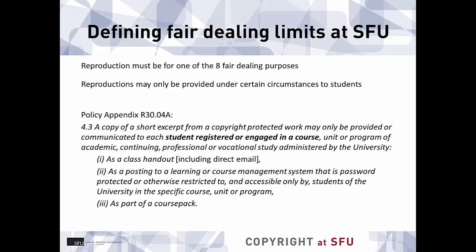SFU, along with many other universities in Canada, has set out parameters and safe harbour limits for faculty and staff to make it easier to know what you can and can't do. The SFU Fair Dealing Policy R30.04a, called Application of Fair Dealing under Policy R30.04, sets out limits that apply to copying works for use in your courses under the eight Fair Dealing purposes. The policy further sets out that the amount of work copied must be a short excerpt, and that the short excerpt can only be distributed to students registered in a course as a class handout — which includes emailing it directly to students — as a posting to a learning management system such as Canvas restricted to students in that specific course, or as part of a course pack. The reproduction has to be for a specific class group, not for wider distribution. You can't post something on a public website, for example, even if it's only intended for one group of students.